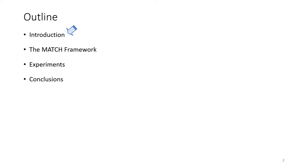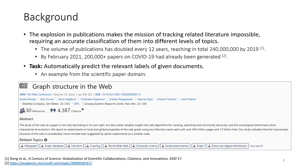Let me introduce the motivation of our study. Microsoft Academic has a web-scale collection of scientific publications, and our study is motivated by two observations in this collection. First, the volume of publications has doubled every 12 years, reaching in total 240 million by 2019.